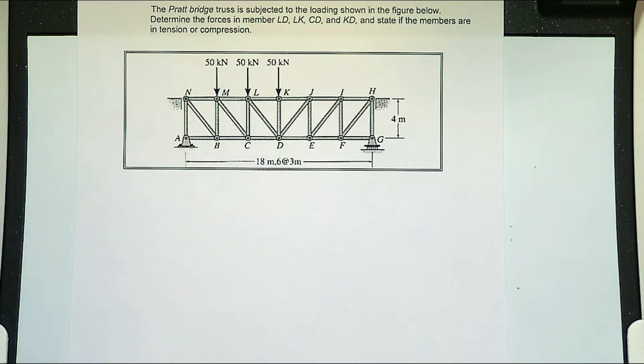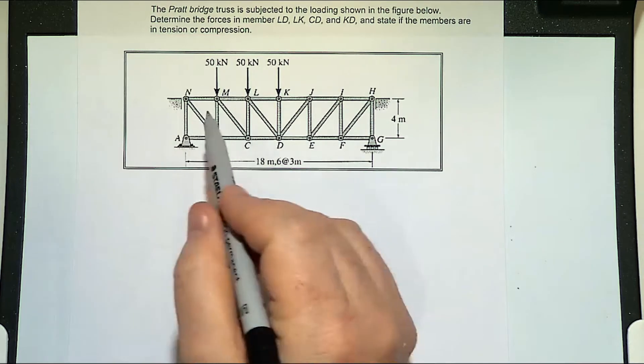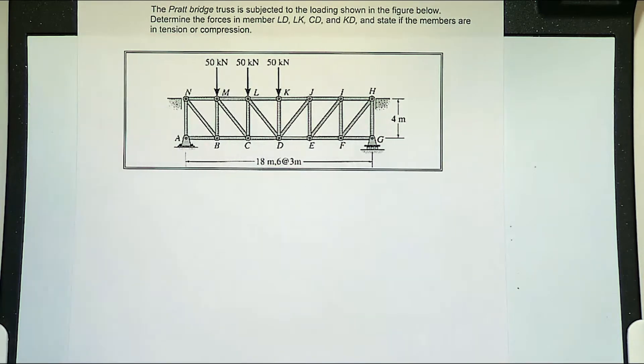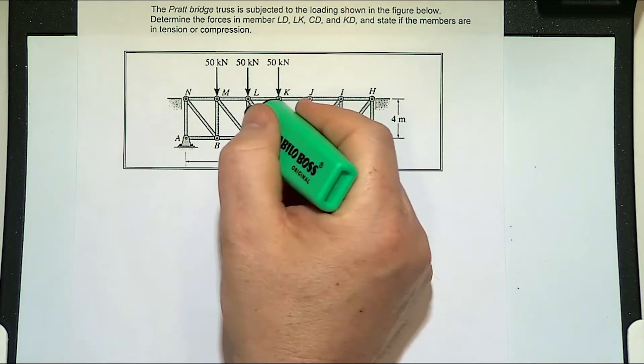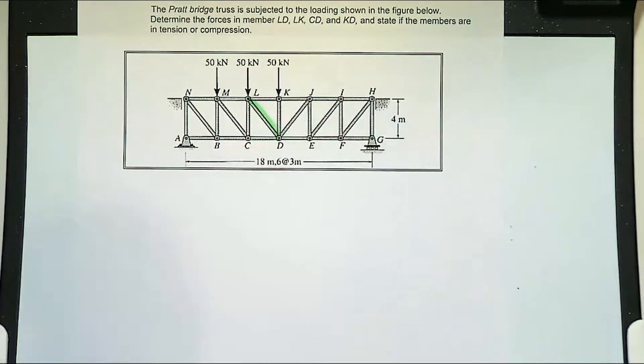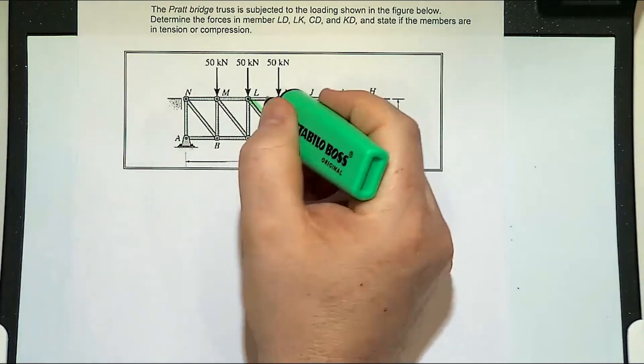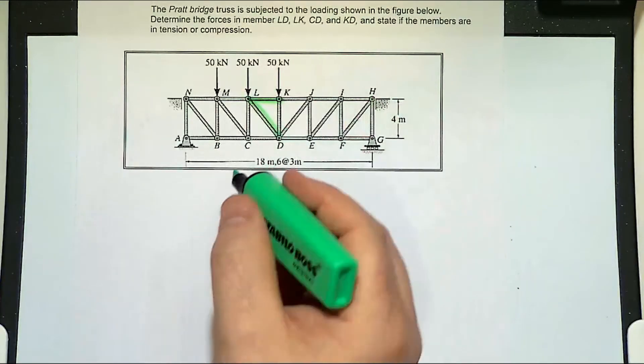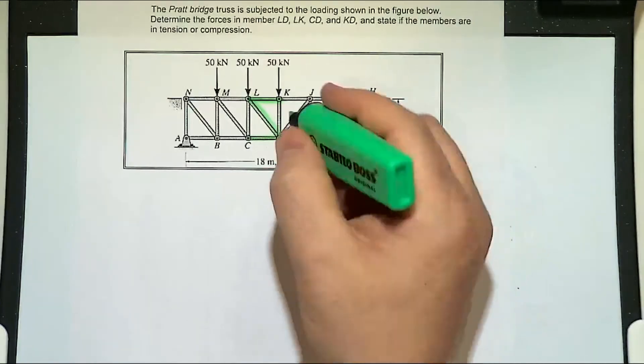We have a Pratt Truss Bridge, which is referring to the shape of the bridge. There's different types of trusses. And it says, determine the forces in LD, LK, CD, and KD.